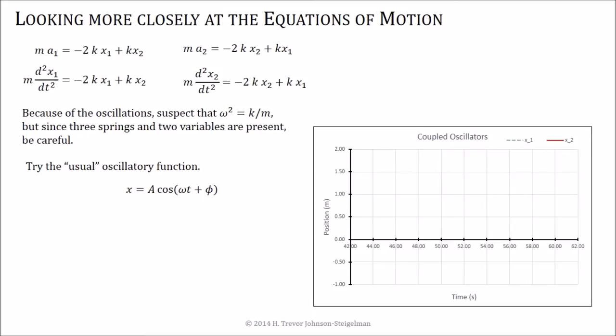Now, if we take a look more closely at the equations of motion for this, remember a is just the second derivative of the position with respect to time, and it kind of looks like if we divide both sides by m, we've got this k over m thing going on, which in the past we called an omega squared, but because there's three springs here and there's two variables that we've got, x1 and x2, we don't want to quite do that. But we want to take a look at what the motion looks like, and I showed you a graph of this before. Notice there is a little bit of oscillatory things going on here, it's just that the amplitudes are fairly strange.